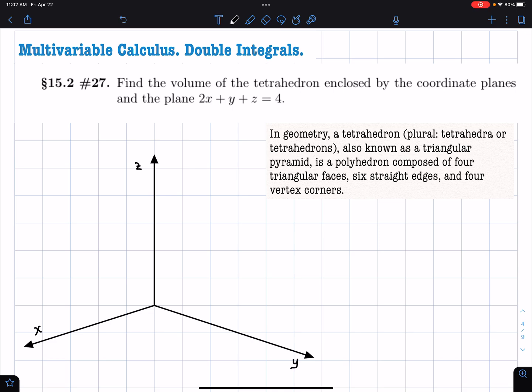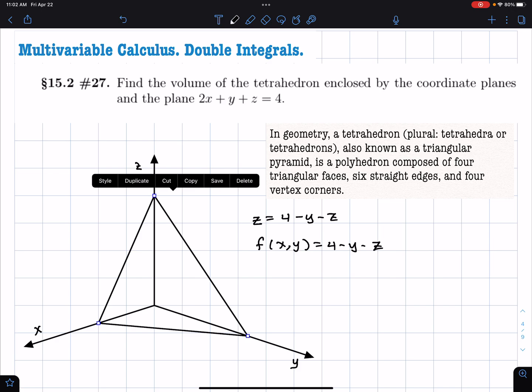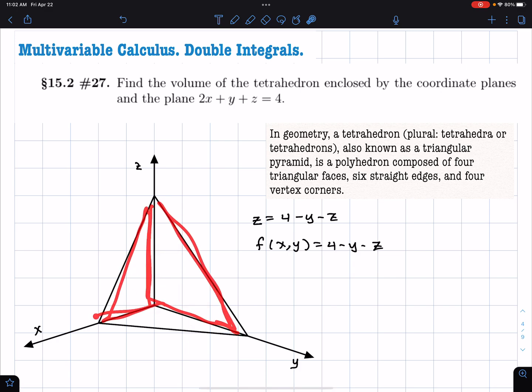And the ceiling of the room is z equals 4 minus y minus 2x. Or you can write f(x, y) equals 4 minus y minus 2x. And so what we're going to get is this plane is something like this.